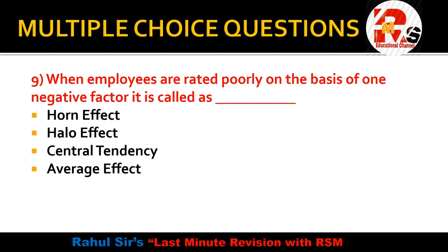Question number 9 is a simple question but it confuses many students. This is basically an HRM concept related to performance appraisal. In performance appraisal, we evaluate employees using different techniques. The question is: when employees are rated poorly on the basis of one negative factor, it is called — Horn Effect, Halo Effect, Central Tendency, or Average Effect. This comes from the limitations of performance appraisal.